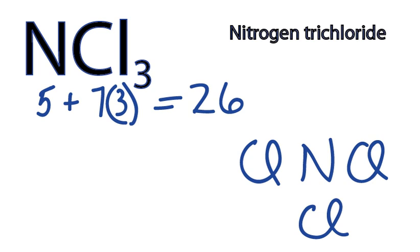And we have 26 valence electrons to distribute around these atoms. Let's put a pair between these atoms to form some chemical bonds, some single bonds. So we've used 6.